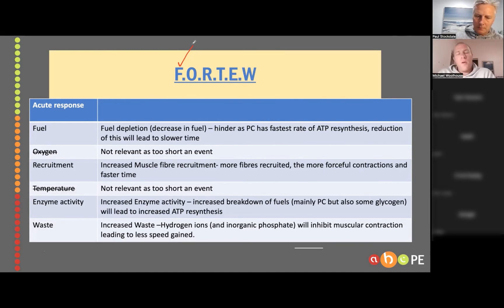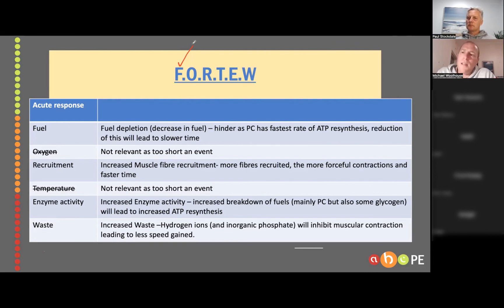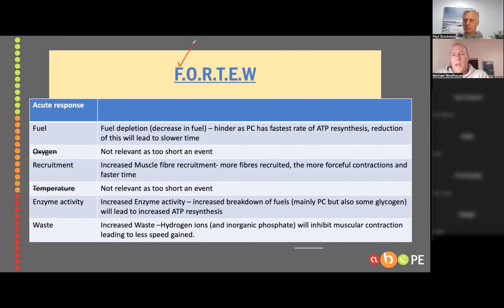Waste products — I would have accepted that. We're using our anaerobic glycolysis system, so particularly towards the end of the event, Kate is going to be affected by hydrogen ion accumulation in the muscles. That's going to inhibit muscular contraction and slow her down. So for me, the four most important ones out of those six are: fuel depletion, motor unit recruitment, enzyme activity, and waste products. Increased oxygen consumption is not as important.